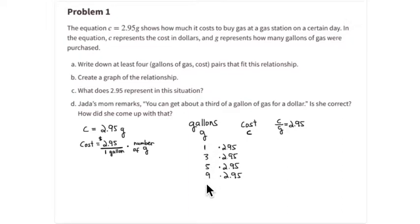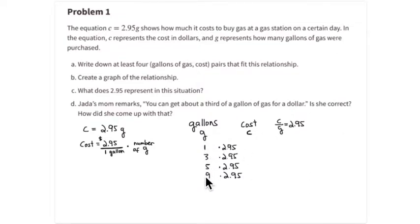Notice that gallons of gas is going to be the x-coordinate — the x-value — that's the independent variable. You go into a gas station, you buy a certain number of gallons, say five gallons, and then they tell you how much it costs. So the cost is going to be the dependent variable — it's dependent on how many gallons of gas you purchase.